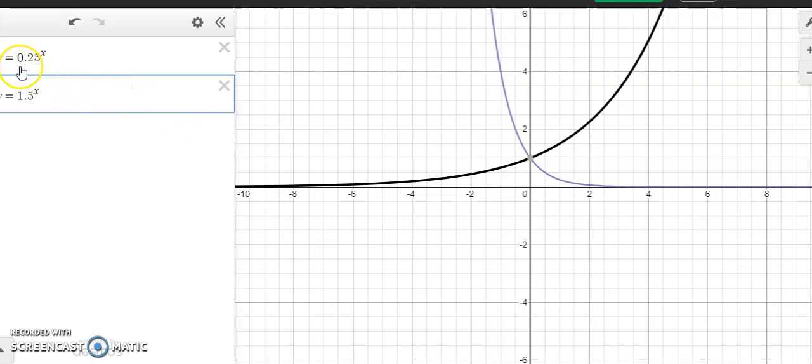The first formula, my base, was 0.25 and that gave me a decay function. The second graph had a base of 1.5 and that gave me a growth function.